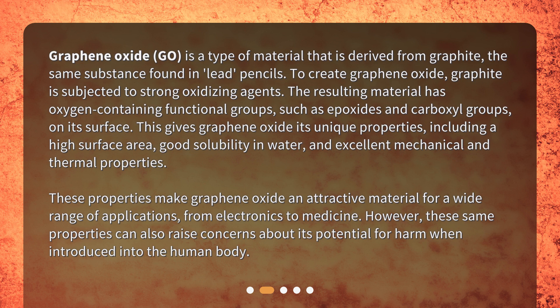This gives graphene oxide its unique properties, including a high surface area, good solubility in water, and excellent mechanical and thermal properties. These properties make graphene oxide an attractive material for a wide range of applications, from electronics to medicine. However, these same properties can also raise concerns about its potential for harm when introduced into the human body.